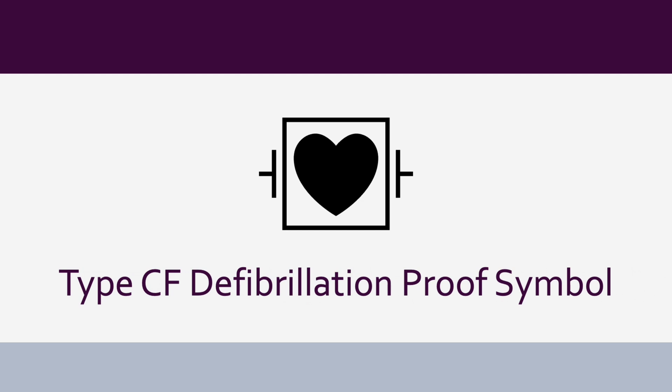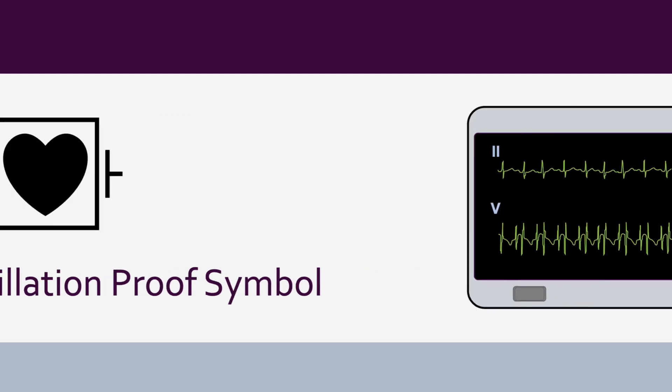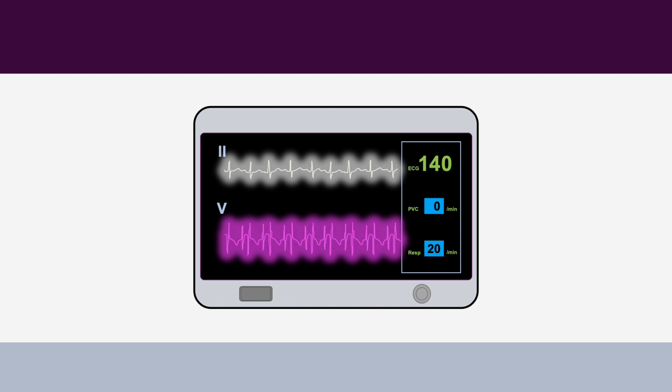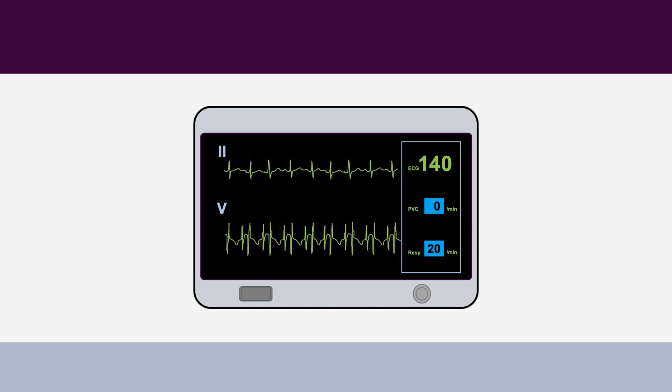The AtriAmp can be safely connected to a Type CF defibrillation proof monitor. Configure the monitor to display a limb lead and the V-lead concurrently. This will allow for timing and interval comparison to be performed between the two leads. Confirm the automated monitoring and alarms are detected from the limb lead electrogram.